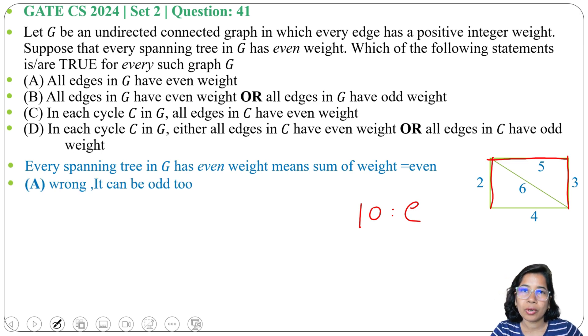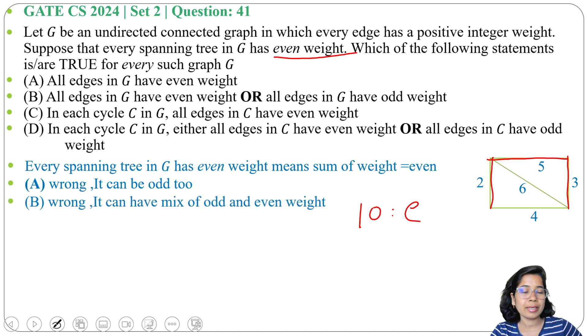It can be odd too. It can be a mix of odd and even. So option A is wrong. Next option B: all edges in G have even weight or all edges in G have odd weight. This is also wrong. There can be a mix of even and odd weight. Here in this example there is a mix of even and odd weight, right?